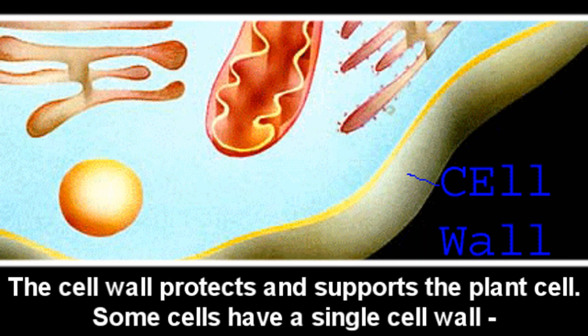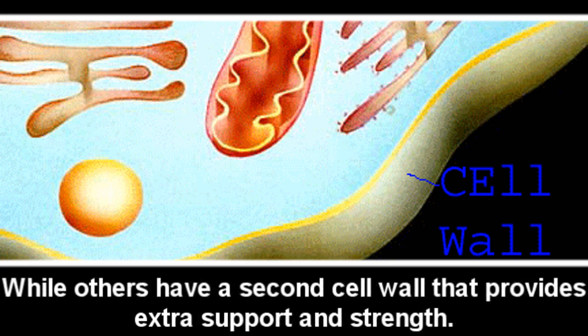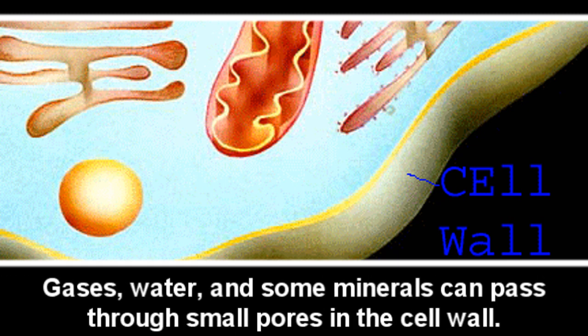The cell wall protects and supports the plant cell. Some plant cells have a single cell wall, but others have a secondary cell wall that provides extra support and strength. Gases, water, and some minerals can pass through small pores in the cell wall.